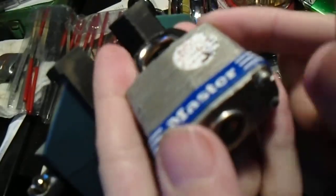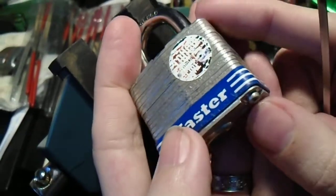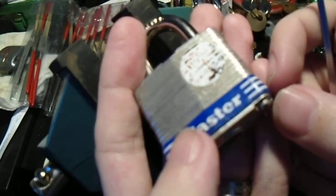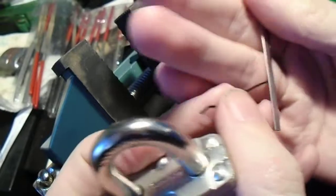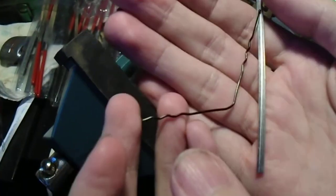Hey, everybody. In my last video, I showed you how to pick a Master Lock No. 1 with a paperclip. This time, we're going to try to do it with a bobby pin.